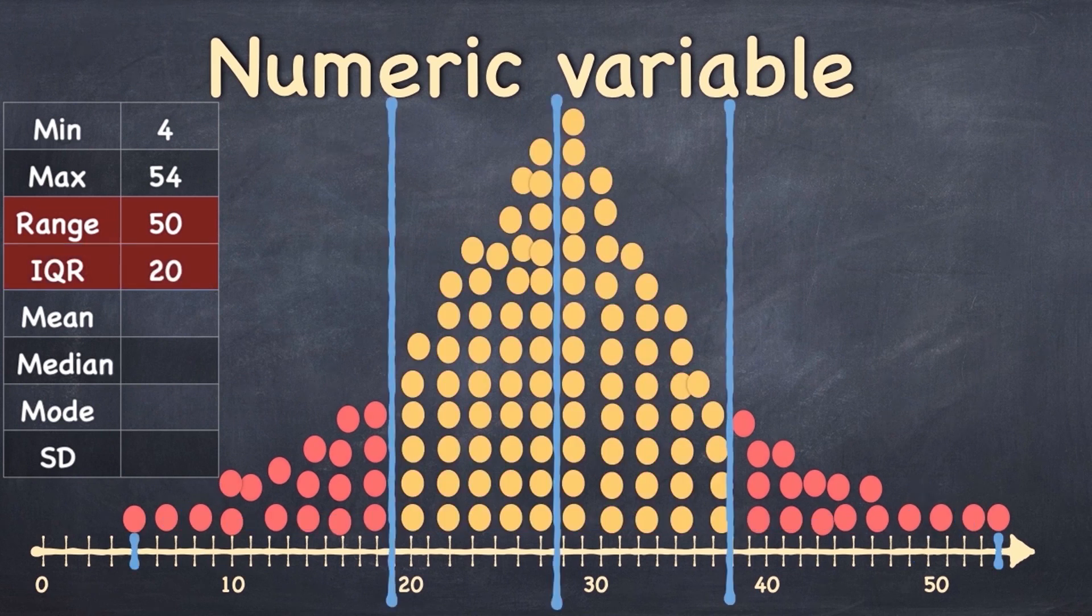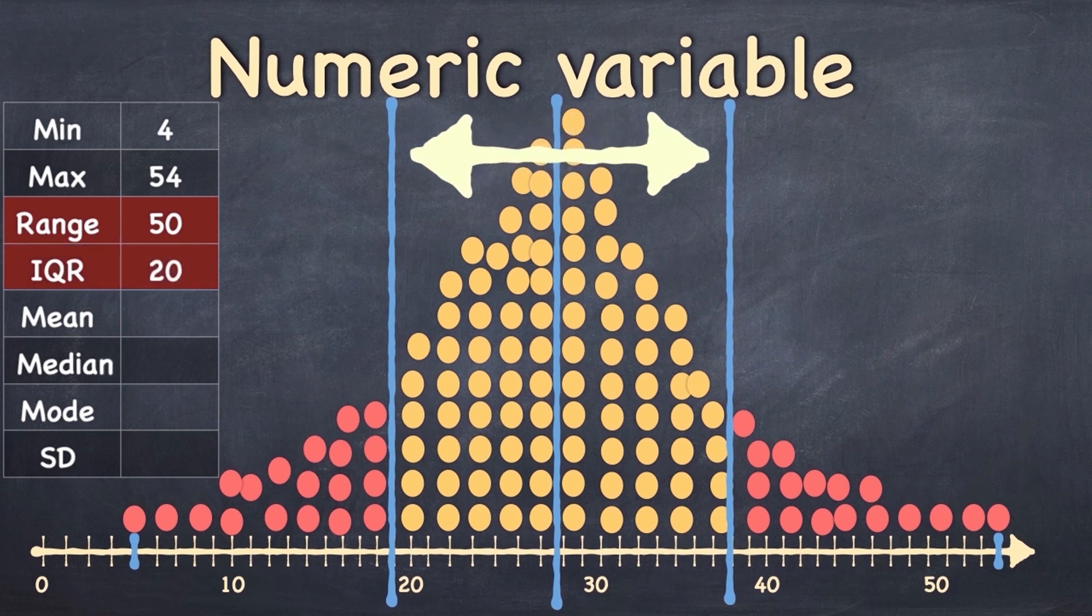And if we divide all of our observations into four equal groups, each of those groups will of course contain a quarter of all the observations, and we call the two middle quarters the interquartile range. And this again is telling us something about how the data is spread out.